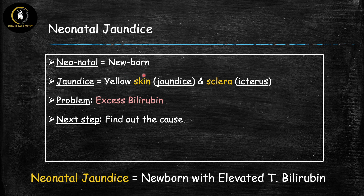Neonatal literally means newborn, and jaundice refers to the yellowing of the skin that happens due to too much bilirubin depositing in that tissue. If this happens in the sclera, that's known as scleral icterus. The underlying problem in jaundice in anyone, including neonates, is excess bilirubin. So neonatal jaundice is a newborn who has too much bilirubin in their body, and the next step is to figure out what caused this — a very important question to answer because it will guide our treatment.